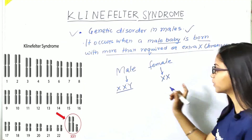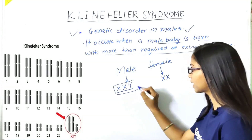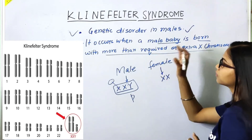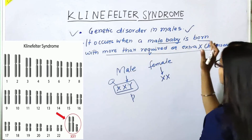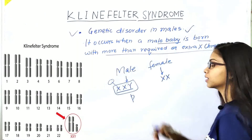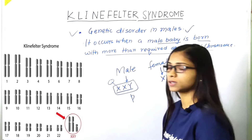When an extra X chromosome is added to the male, the physical traits of the male become abnormal — it will not be the same as a normal person. Deformities come. One X chromosome is added to the male, and that's why the problem begins here.